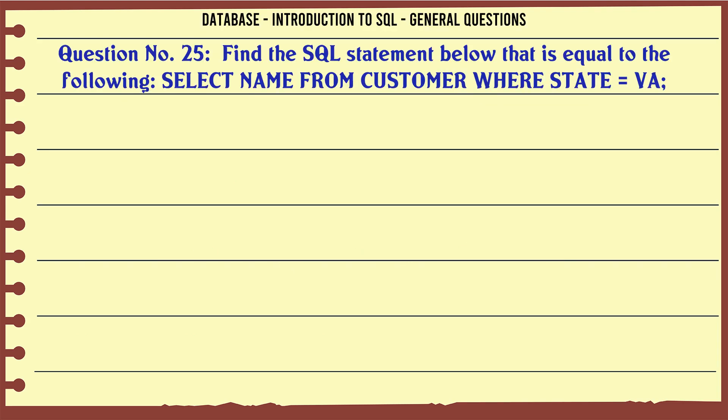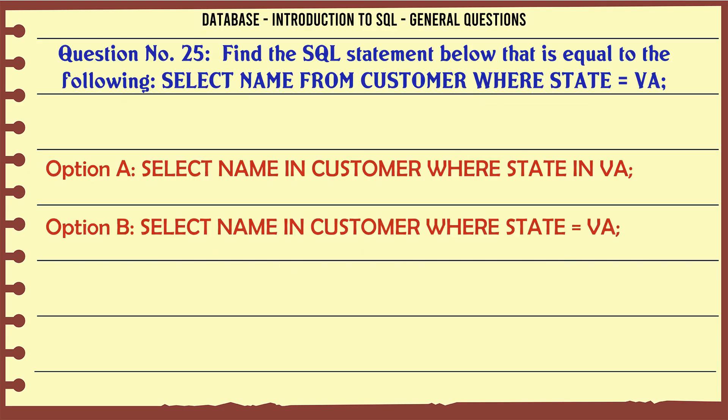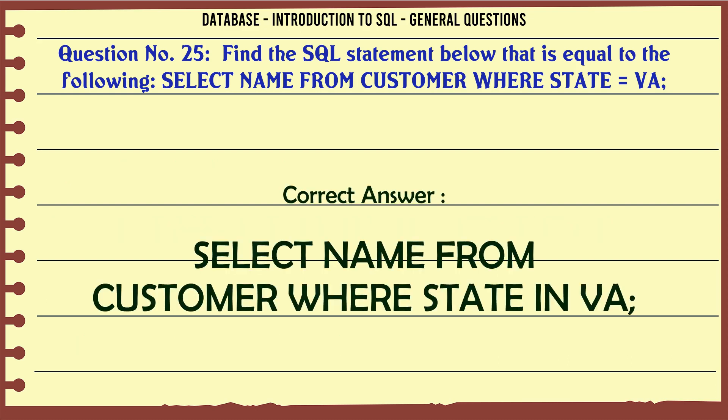Find the SQL statement below that is equal to: SELECT name FROM customer WHERE state = 'WA'. A. Select name in customer where state in WA. B. Select name in customer where state WA. C. Select name in customer where state WA. D. Select name from customer where state in WA. The correct answer is: Select name from customer where state in WA.